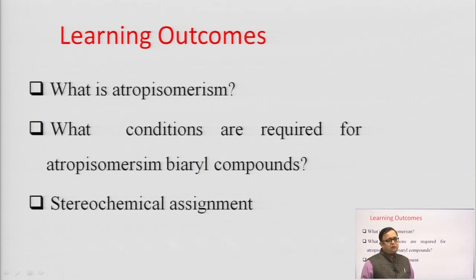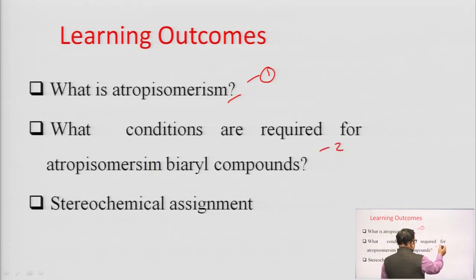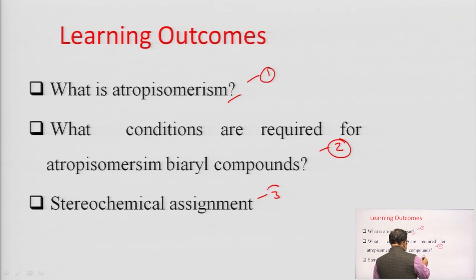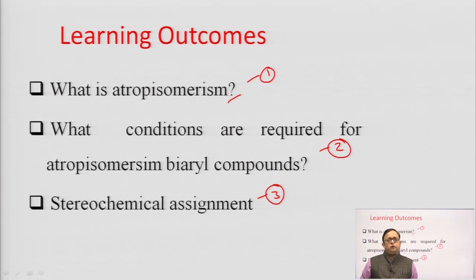Here are three objectives that we are going to cover in this discussion: first, what is atropisomerism; second, what conditions are required for atropisomerism in biaryl compounds — biaryl compounds are a very good example of atropisomerism — and third, how stereochemical assignments are done, meaning how their configuration is determined.